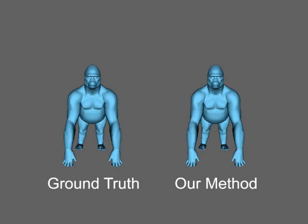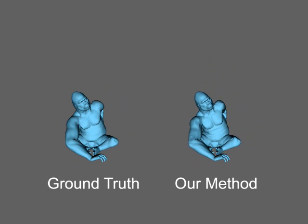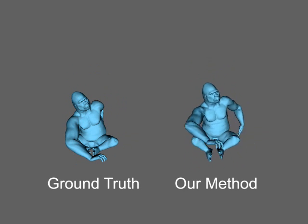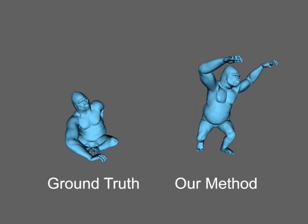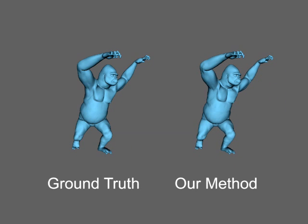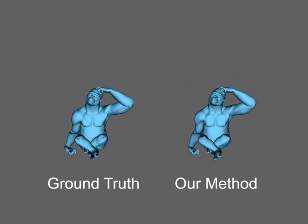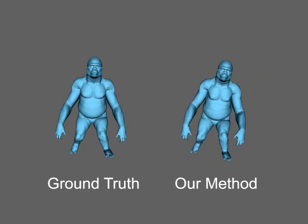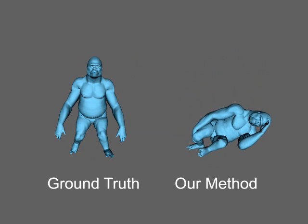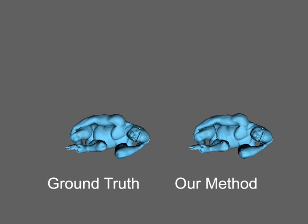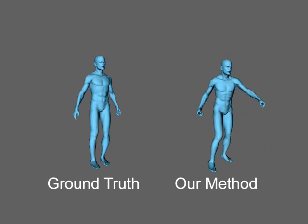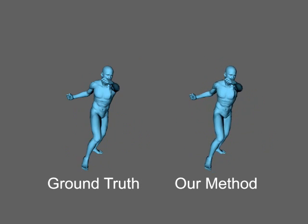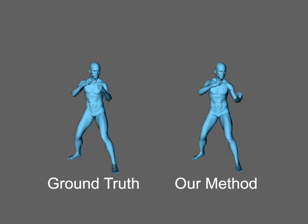Here, we have no problems modeling the large arms and shoulders of the gorilla figure, while SSD causes collapsing artifacts. Our model even works well with this set of artist-generated extreme poses.